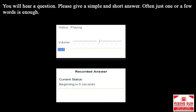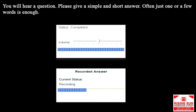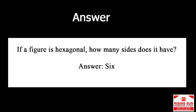If a figure is hexagonal, how many sides does it have? Answer: six.